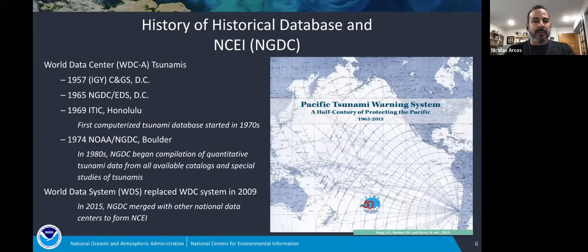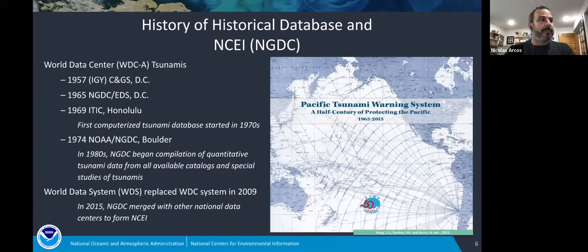The World Data Center system was replaced by the World Data System. We at NCEI serve as the World Data Service for Geophysics, which includes tsunamis. Being part of those services means we enable access to quality-assured scientific data, have long-term stewardship of the data, foster and comply with data standards, and try to improve access to data. NGDC merged with three other data centers in 2015 and now we are part of NCEI, the National Centers for Environmental Information. Originally this database was focused on the Pacific, but approximately in the early 1990s that changed and we started to have a global look at tsunamis and tsunami sources.